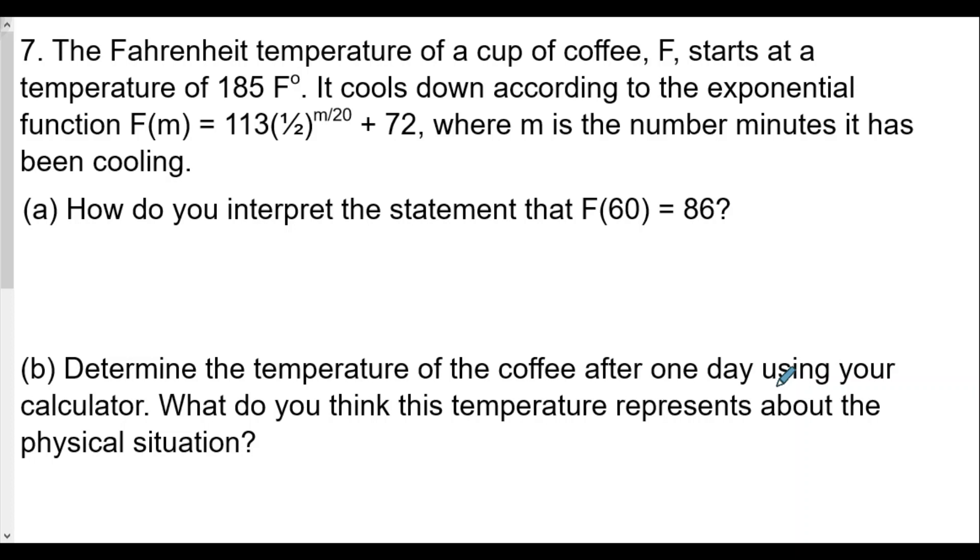For part 3, we start with question number 7. The Fahrenheit temperature of a cup of coffee F starts at 185 degrees. It cools down according to the exponential function F(m) = 113 times (1/2) raised to the m over 20 plus 72, where m is the number of minutes it has been cooling.